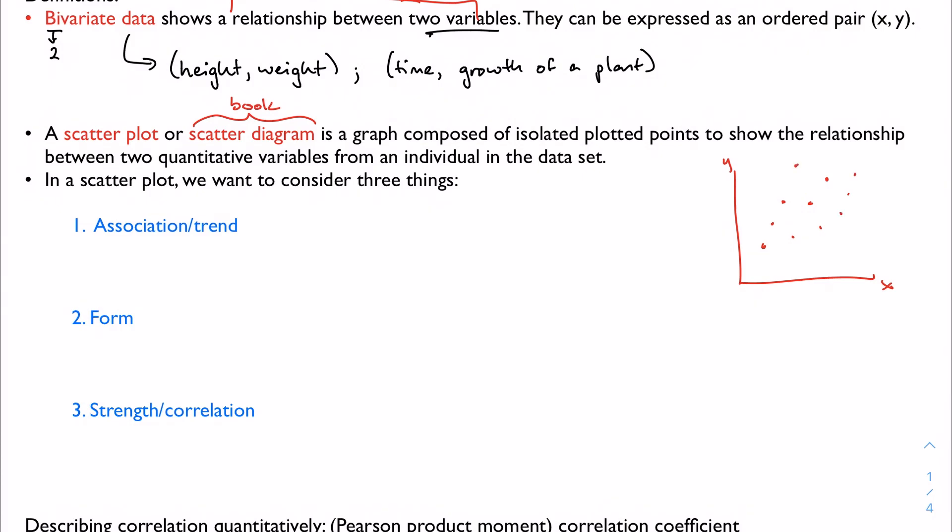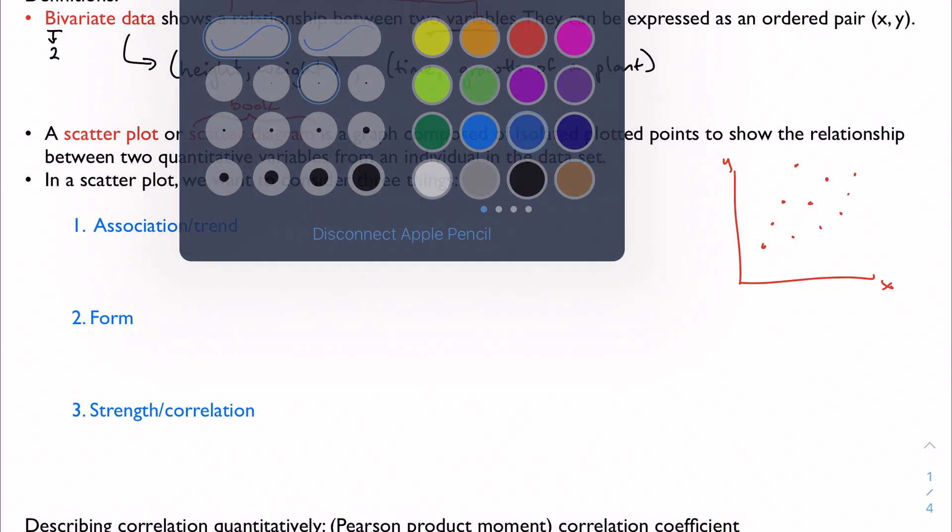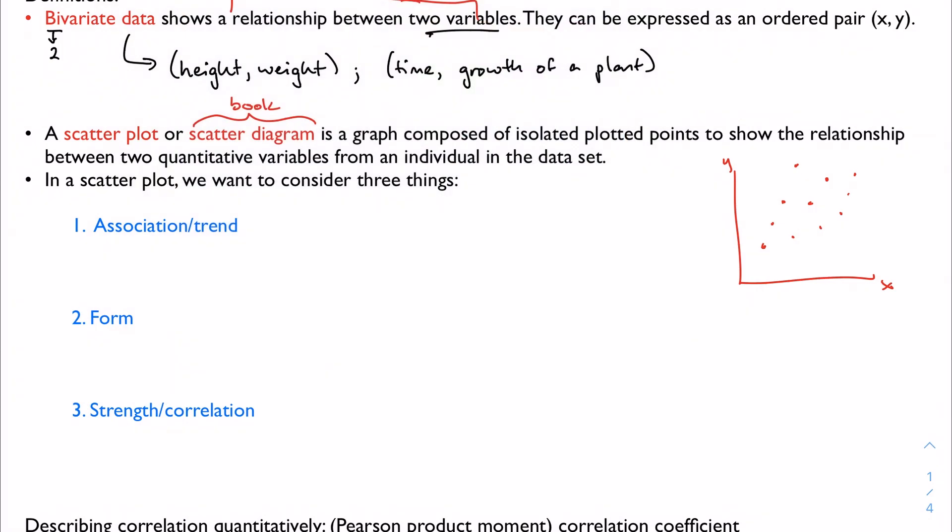When we do this, we want to consider three things. The first thing is the association or the trend, and this association is typically positive or negative. Looking at my example, there's a clear positive trend here—as x increases, y seems to increase as well.